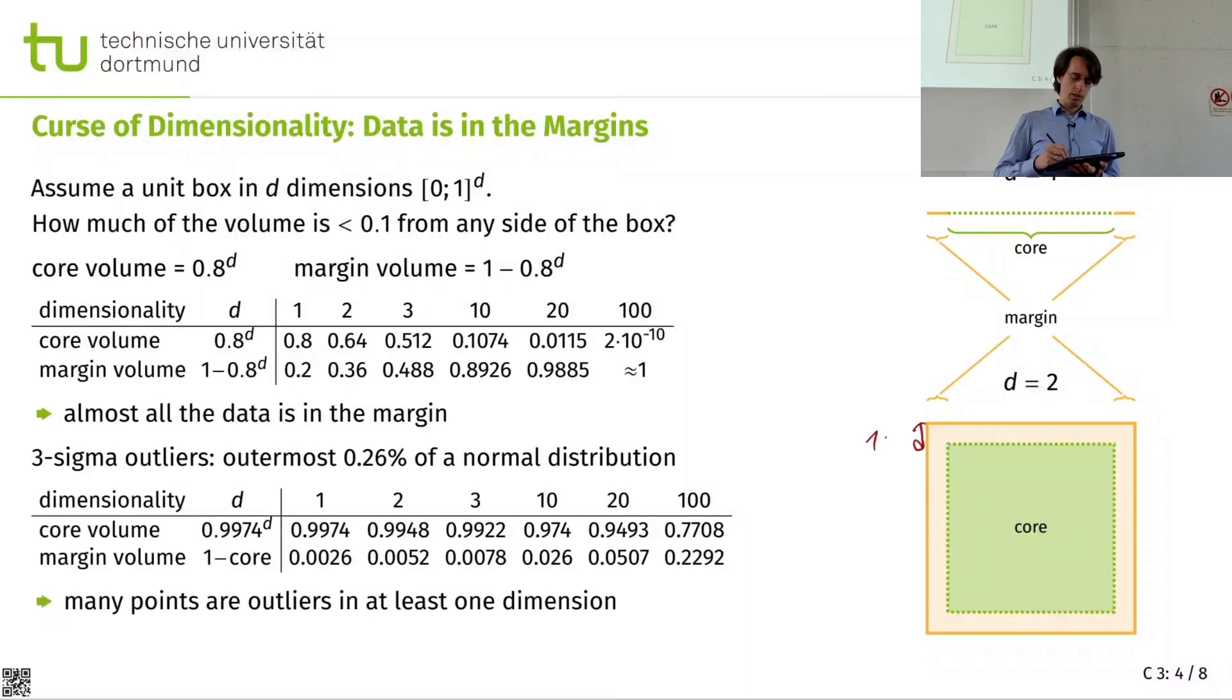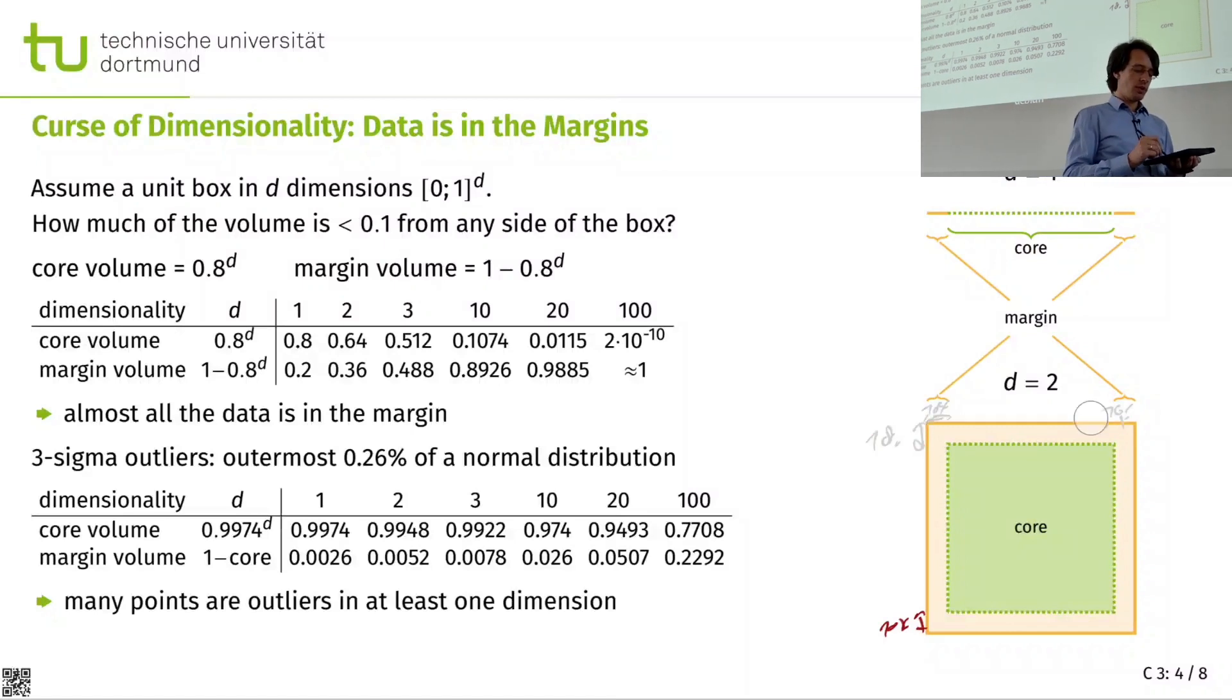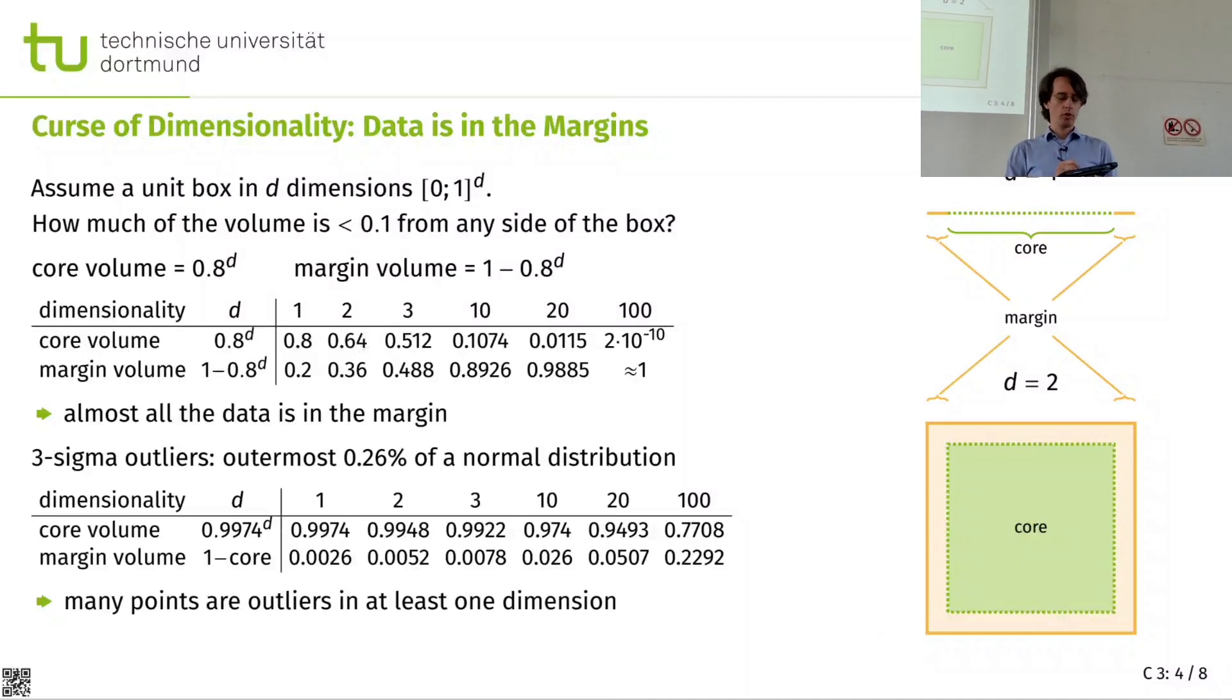Now if I go from one dimension to two dimensions. So I have 10% here. And I have 10% here. And 10% of course in the bottom. And 10% at the right that I cut off. I no longer just cut off 20%. But I actually already cut off more than one-third of my data. And the core only has 64% remaining. And as I do this in more and more dimensions, at 20 dimensions only 1% of my data is in here. And 99% of my data is out there.